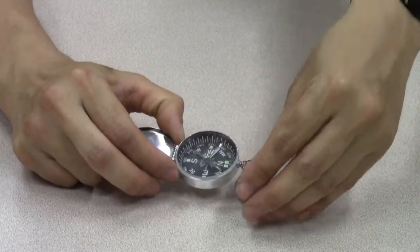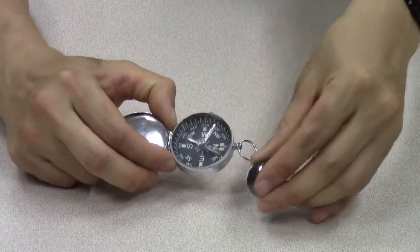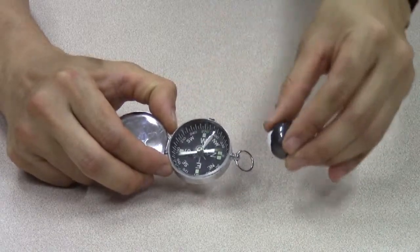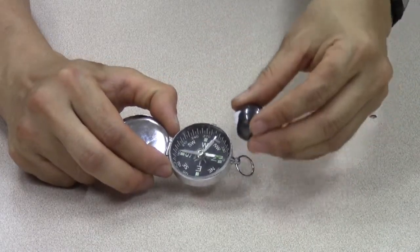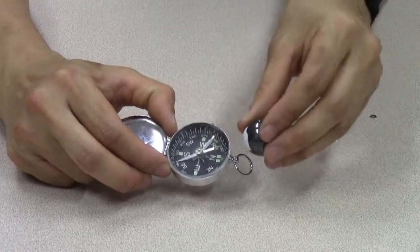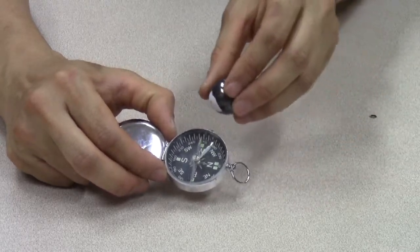I don't know if you can see, but it's moving the needle around. So if the north-pointing needle of the compass points at that end of the magnet, that's obviously my south pole of the magnet.